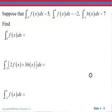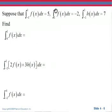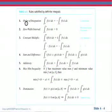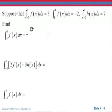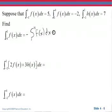Now let's use some of the properties we just found. We are given integrals that we know the values for. If I want to know the integral from four to one, I know the integral from one to four. The order of integration says if I switch these limits, then it's going to be the opposite integral. So this will be the opposite of the integral from one to four of f of x dx. The integral from one to four of f of x dx was negative two, so the opposite of negative two would be two.